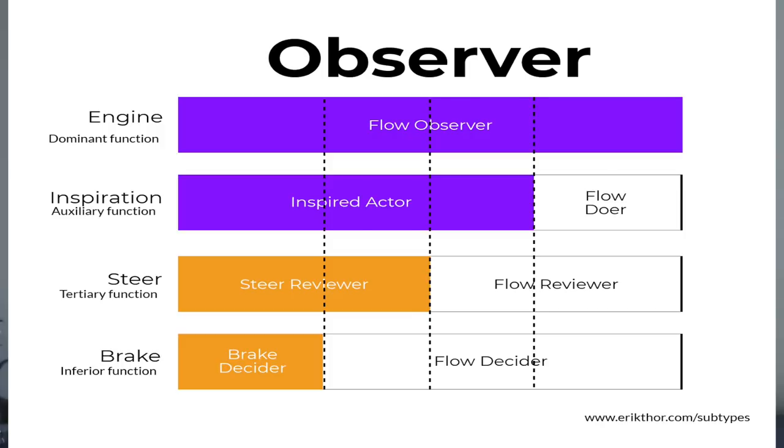There are four important subtypes to talk about: the observer subtype, the decider subtype, the reviewer subtype, and the actor subtype. Those are the most important to remember.